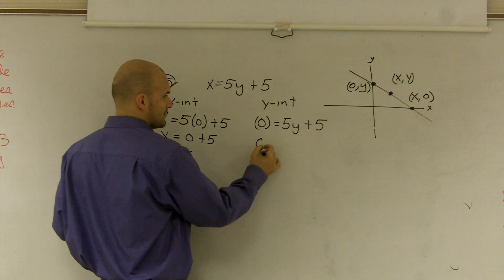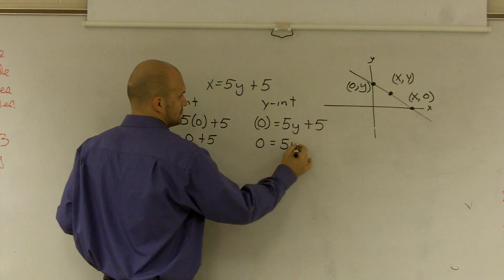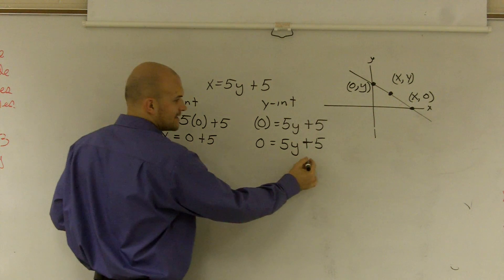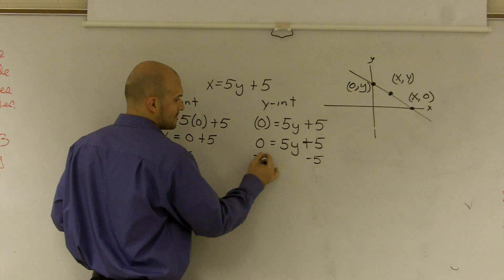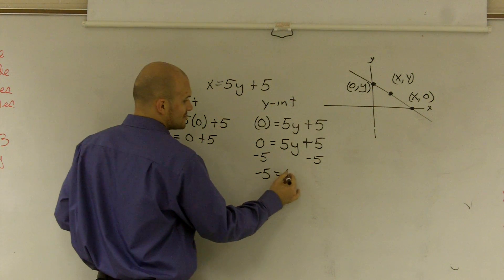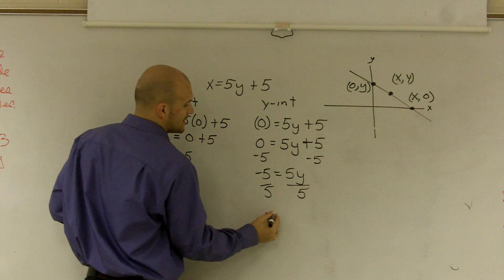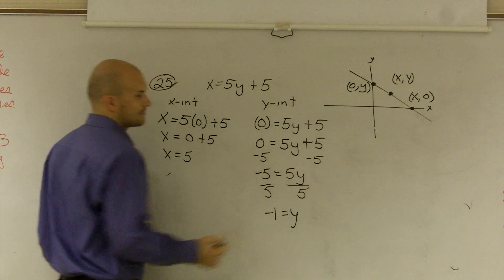This one's a little more difficult. Here, I have to get rid of all my five. So I first have to get rid of the five that's adding to it. So I have negative five equals five y. Then I divide by the five, and I get negative one equals y.